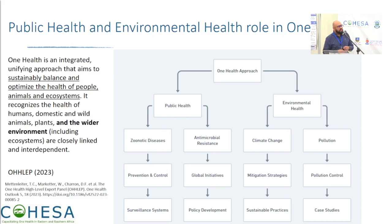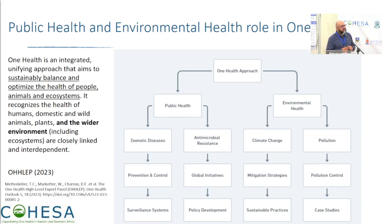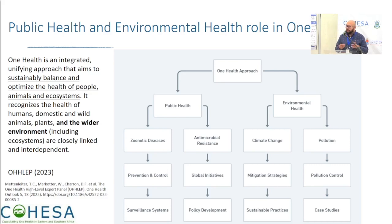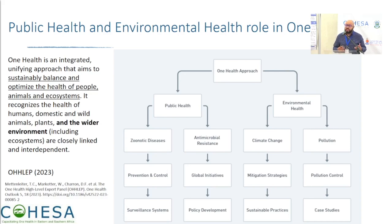Thinking about where public health and environmental health really fit in One Health — reflecting on the work we've done around antimicrobial resistance, climate change, pollution, and pollution control — these all tie in and do fit. Looking at the definition presented: it's this balance between optimizing the health of animals, people, and the ecosystem itself. What I like is that it comes back to a wider environment. We often don't think of it in terms of a wider environment.